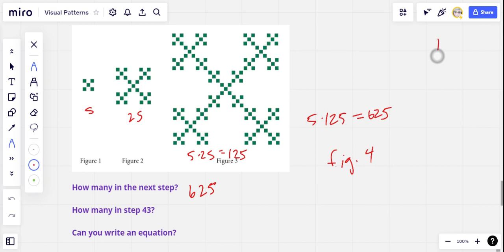But I think our prediction for figure four is going to be six hundred and twenty-five squares. We can take a minute to analyze the numbers. So I'll put in the figure number and the number of squares. So we've got five. Sorry. In figure one, we've got five.